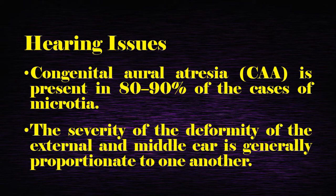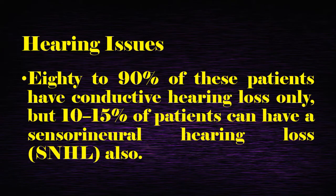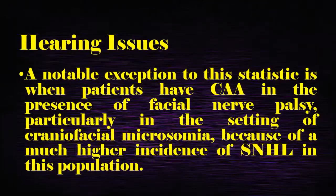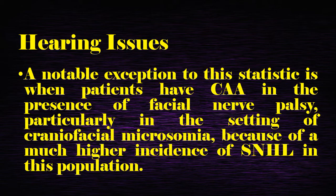Congenital aural atresia is present in 80–90% of cases of microtia, and the severity of the deformity of the external and middle ear is generally proportionate to one another. About 80–90% of these patients have only conductive hearing loss, but 10–15% can have sensorineural hearing loss. A notable exception is when patients have congenital aural atresia in the presence of facial nerve palsy, particularly in the setting of craniofacial microsomia, because of the much higher incidence of sensorineural hearing loss in this population.